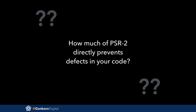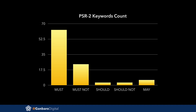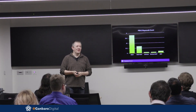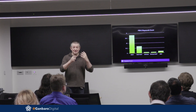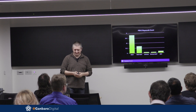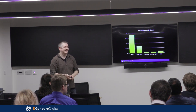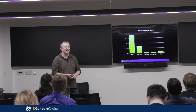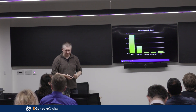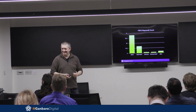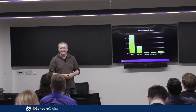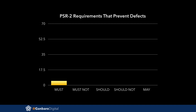So, how much of PSR2 do you think directly improves the quality of your code? Chris is even more brutal than me. Here's our distribution — how much of that do you think actually helps? Anyone give me a number, anything below 96? None? Okay, does anyone want to go higher than zero? No.